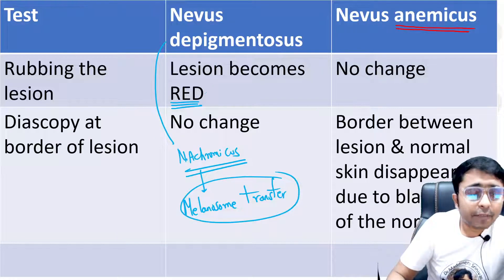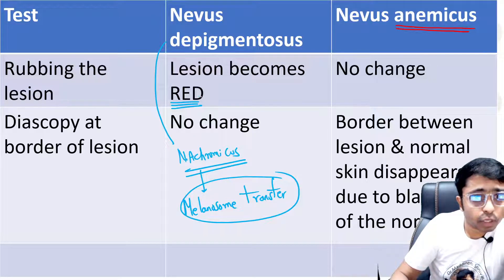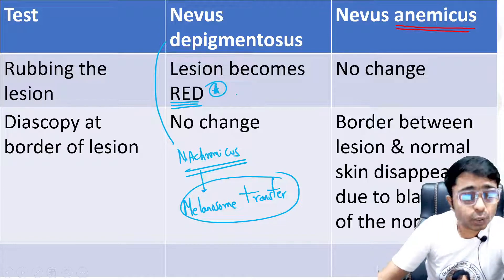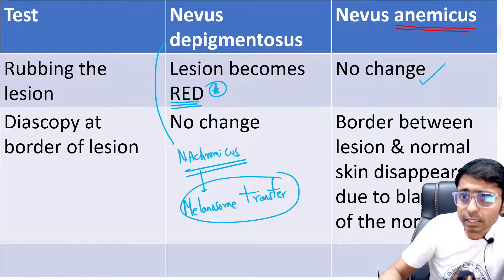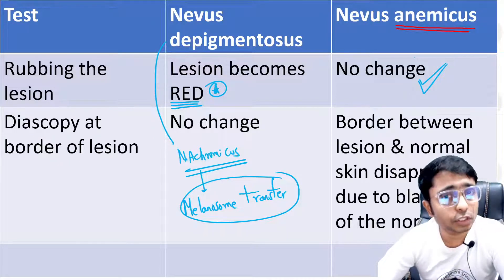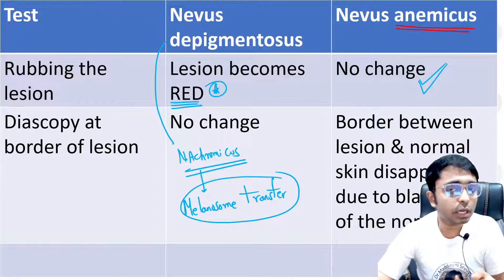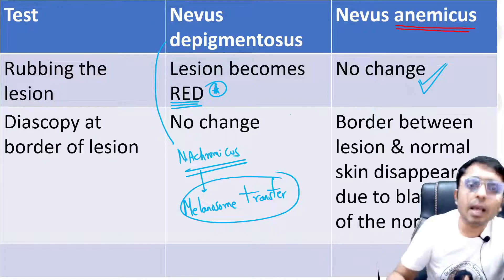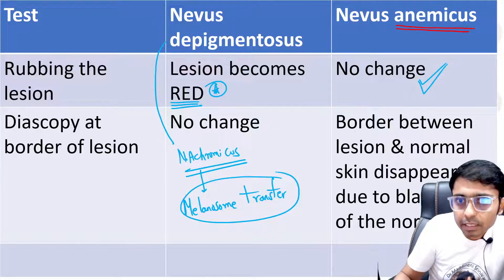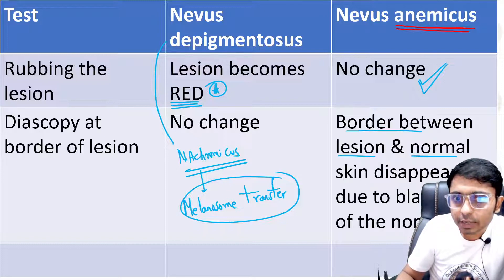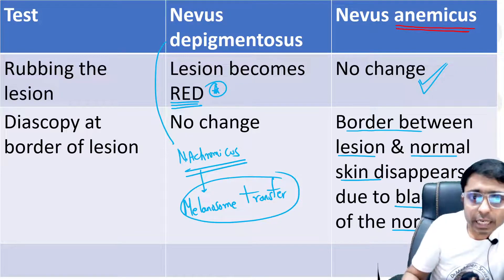When you rub the lesional skin in Nevus Depigmentosis, the lesion becomes red due to vasodilatation from activation of blood vessels. Whereas in Nevus Anemicus, because of the excessive catecholamine effect, blood vessels stay in a vasoconstrictive mode — they will not dilate. So there will be no change in the lesion on rubbing. Additionally, with diascopy, the border between the lesion and the normal skin disappears in Nevus Anemicus due to blanching of the surrounding normal skin.